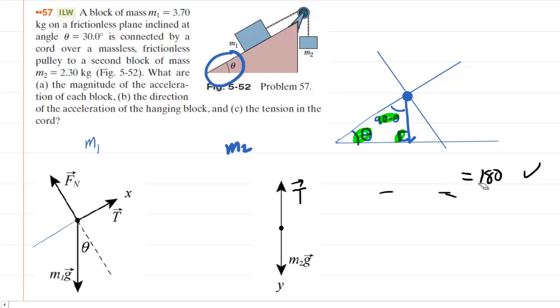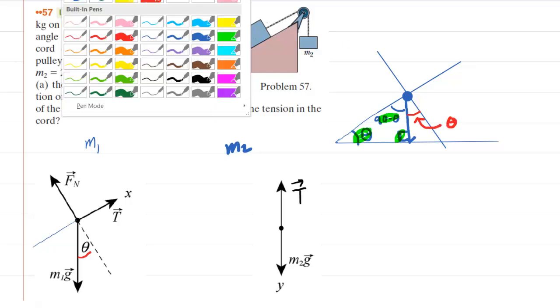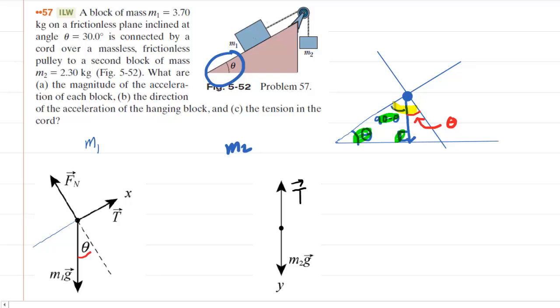So that angle is 90 minus theta, but the angle that we want is actually this one right here, which is the same as the angle indicated in the free body diagram. That angle is actually just going to be theta. How do we know that? It's because collectively this blue and red angle form a 90 degree angle. So the blue angle, when added to the red angle, should end up equaling 90 degrees.